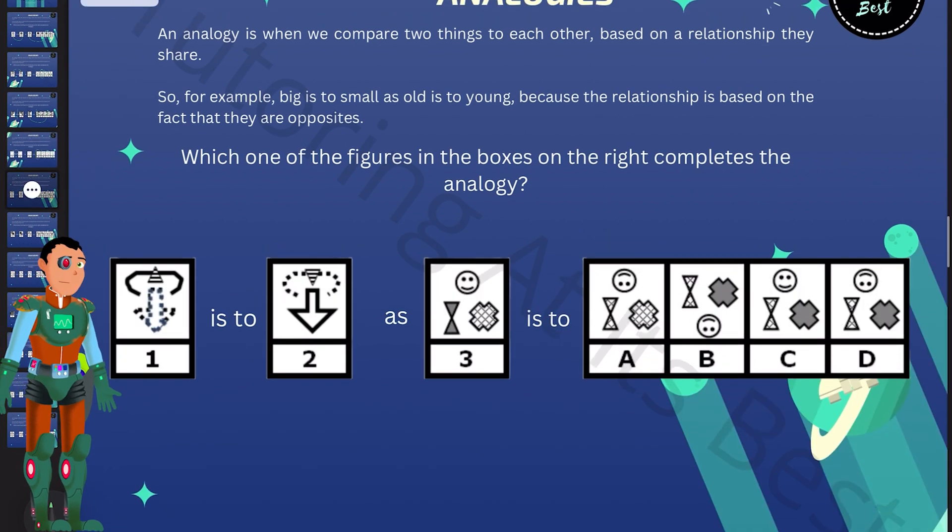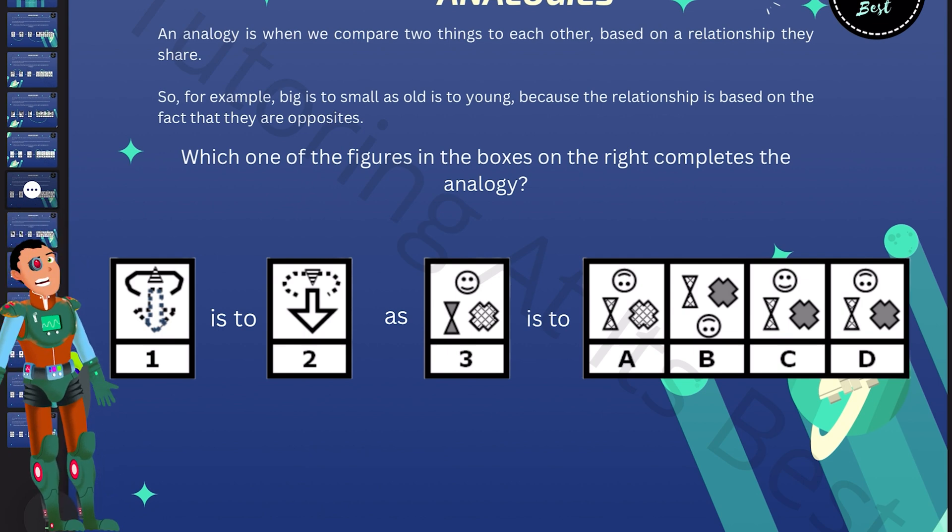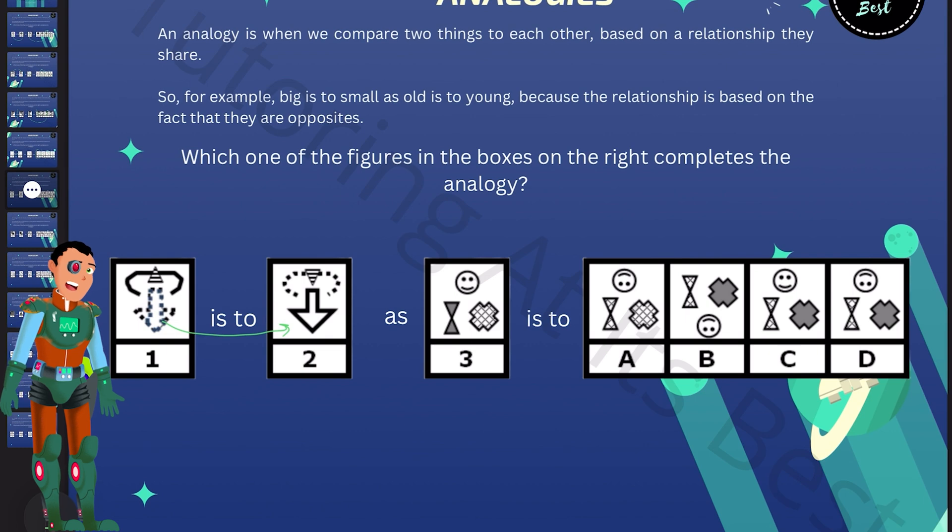Question five. So again, let's go ahead and compare one and two. Well, we know that figure one swaps dotted lines for solid lines. So that's the first one. And the solid lines for the dotted lines. And that's the second. So if we take a look at box B, C and D, they all do this.